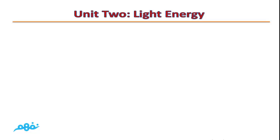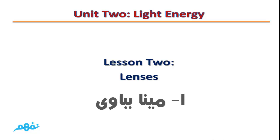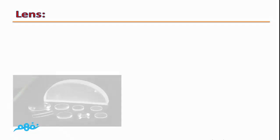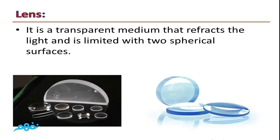Unit 2, Light Energy Lesson 2: Lenses. What is meant by a lens? It is a transparent medium that refracts light and is bounded by two spherical surfaces.